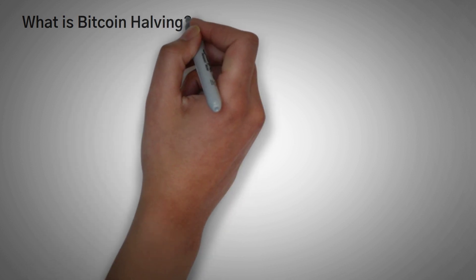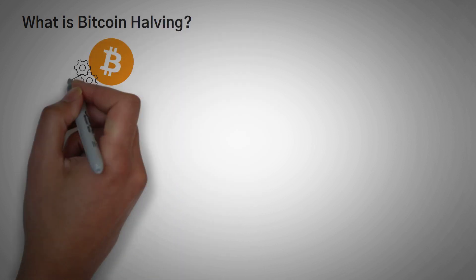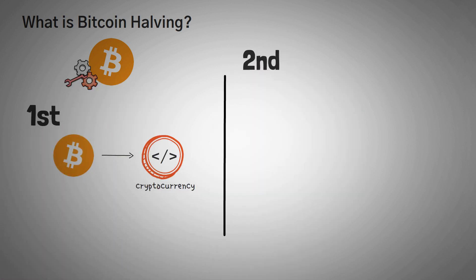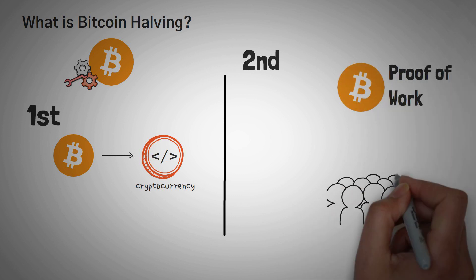So, what is Bitcoin halving? Well, before we get too deep into this video, you need to know basics of how Bitcoin works. First, let's assume that you know Bitcoin is a cryptocurrency. Second, let's assume that you know that Bitcoin uses a proof of work mechanism, which simply means a bunch of people are competing to solve a problem.